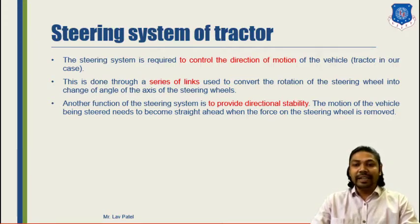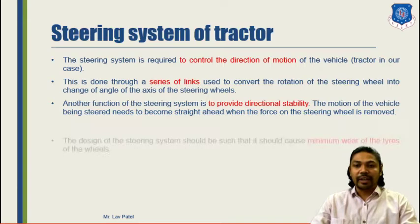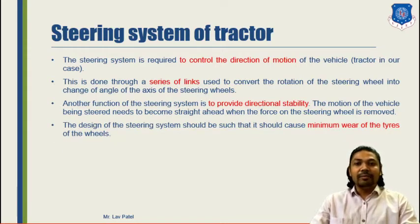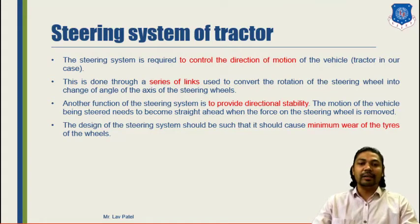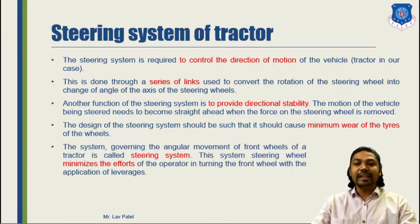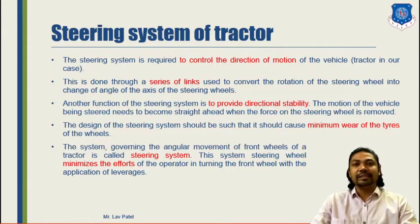The second objective of the steering system is to provide directional stability — meaning the motion of the vehicle should return straight ahead when the force on the steering wheel is removed. To design the steering system we must consider that minimum wear of tires should occur. There are several steering geometry terms like camber, caster, toe-in, and toe-out that we need to consider.